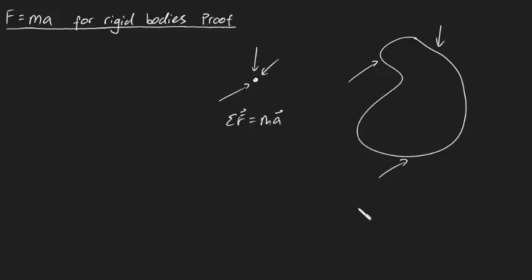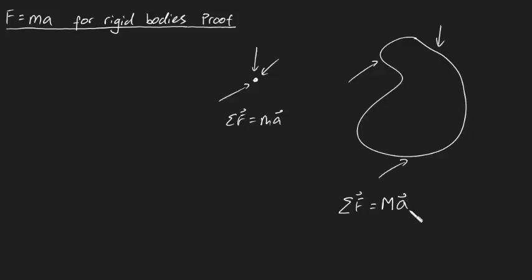Well, spoiler alert: if we were to sum up all of the external forces acting on our rigid body, we can prove that this is equal to the total mass of our rigid body times by your acceleration of your center of mass of your rigid body. And this is the formula which I'm going to derive for you now.